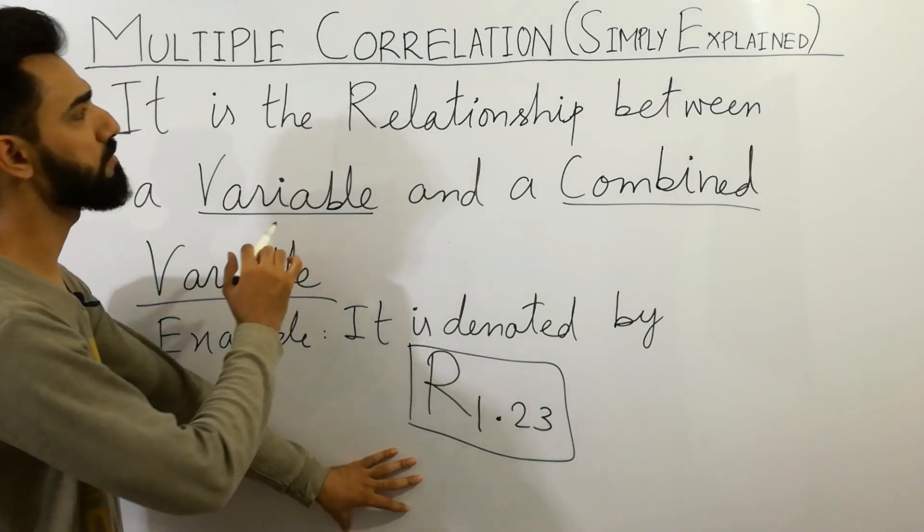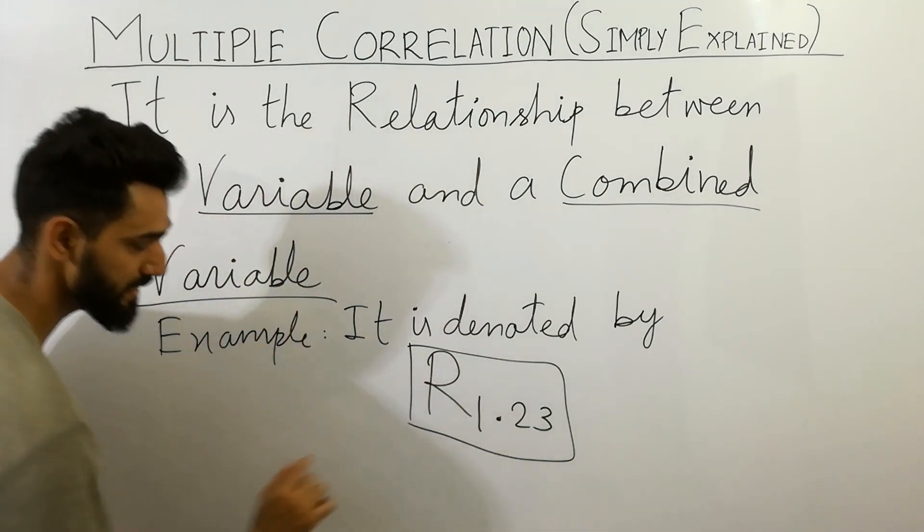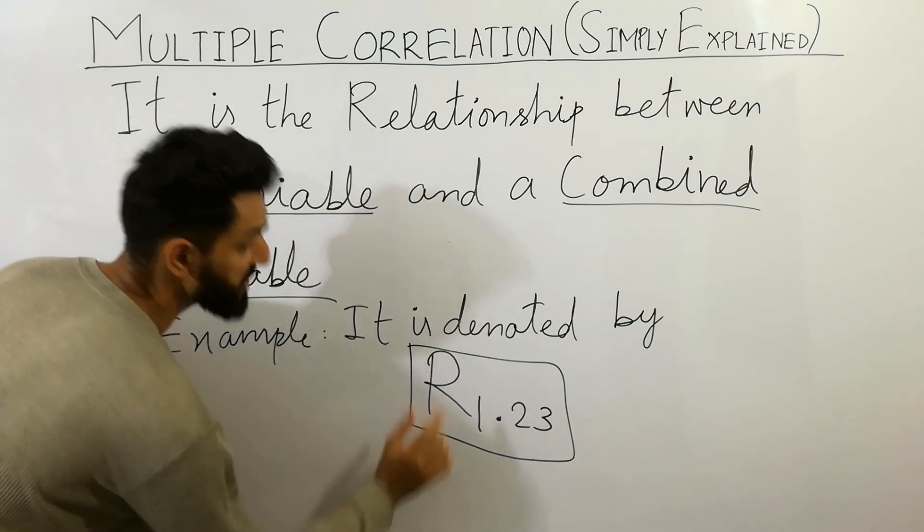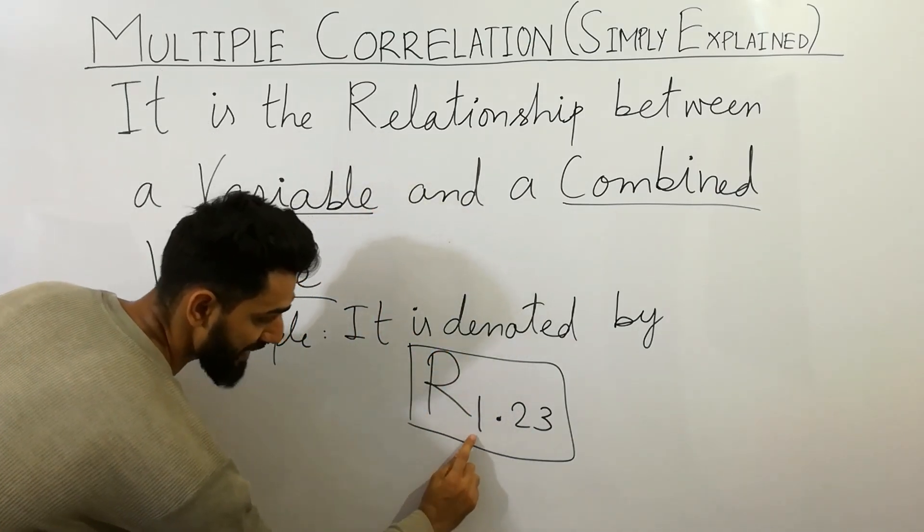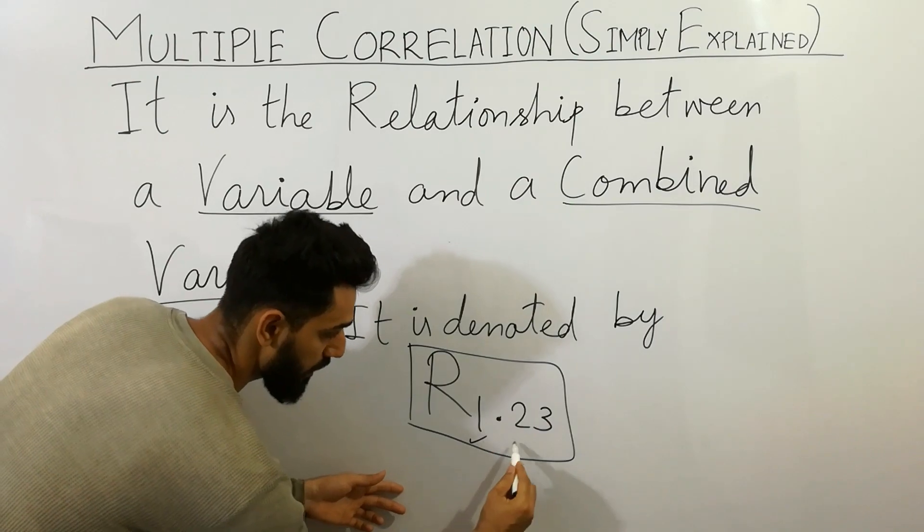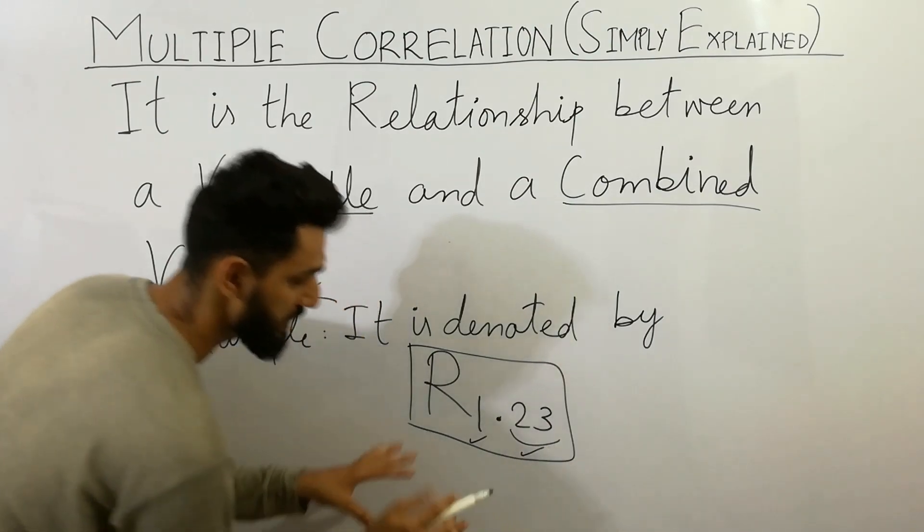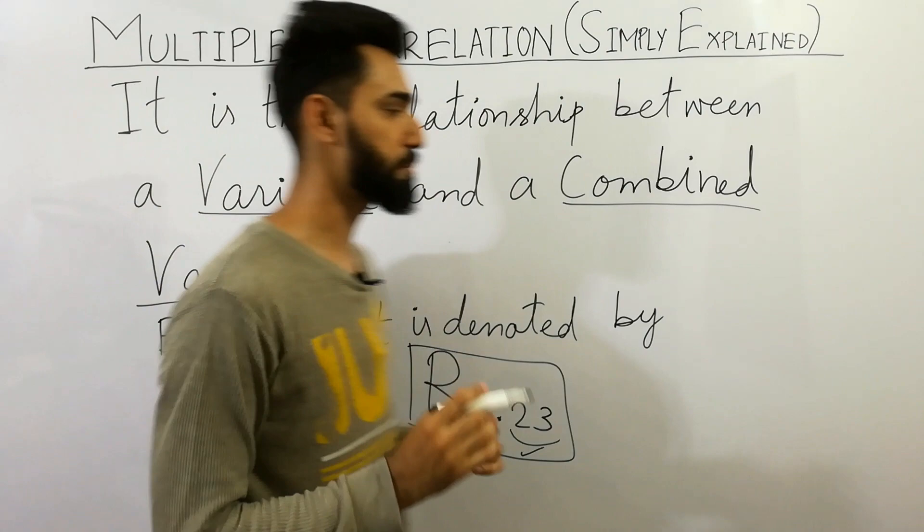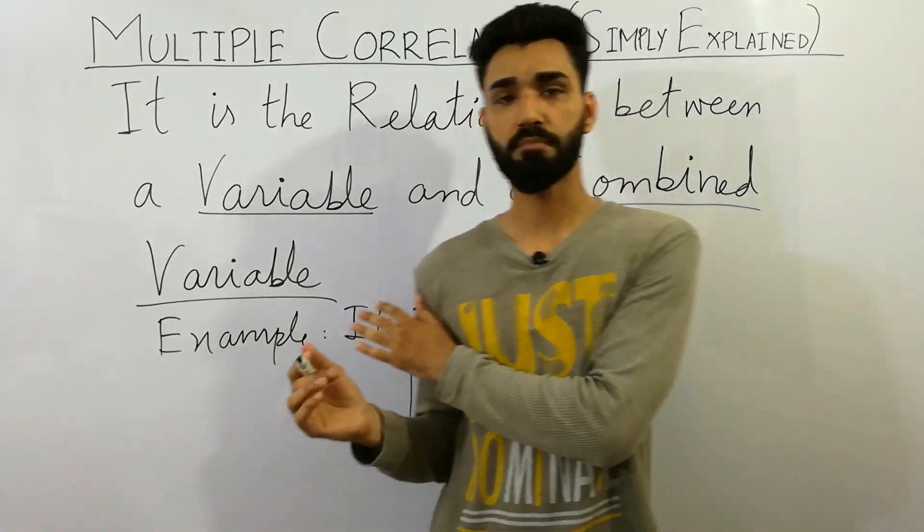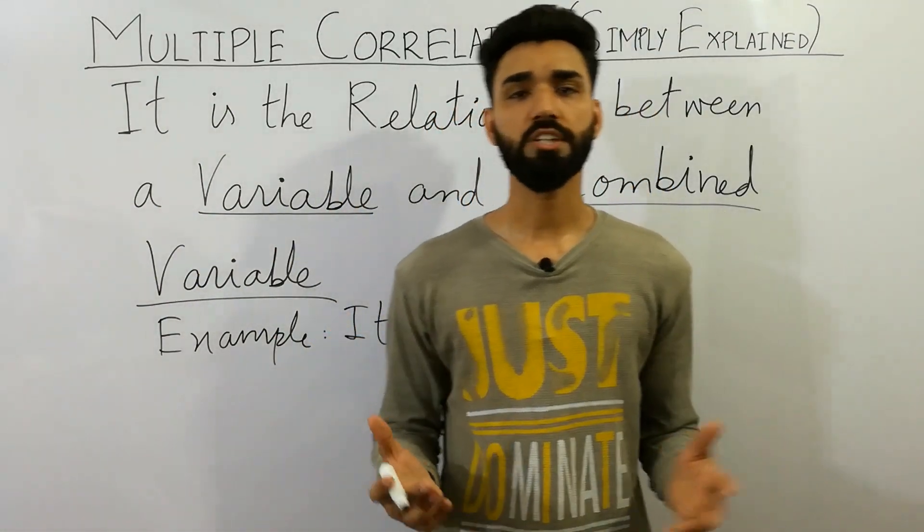By this you can easily remember the definition of multiple correlation. Multiple correlation is the relationship between a variable and a combined variable. That's called as multiple correlation. I hope that you are clear on the concept about what is the multiple correlation.